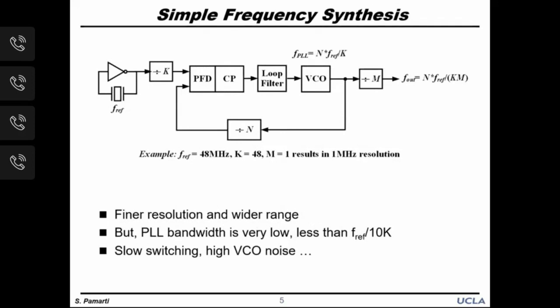Finer resolution can be achieved by including frequency dividers K and M before or after the PLL. For example, f-ref equal to 48 MHz, K equal to 48, and M equal to 1 gives 1 MHz resolution. This implies the PLL now runs on a 1 MHz reference. Unfortunately, type-2 PLL bandwidths are limited to a tenth of the reference frequency for stability, so our PLL bandwidth would be at most 100 kHz. Since VCO noise is suppressed only within the PLL bandwidth, this greatly increases the VCO noise contribution — very undesirable.